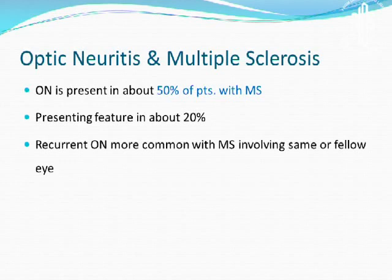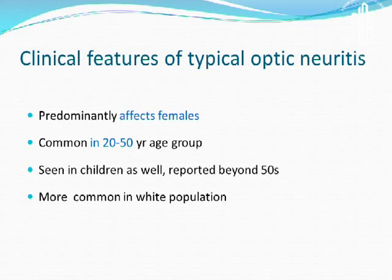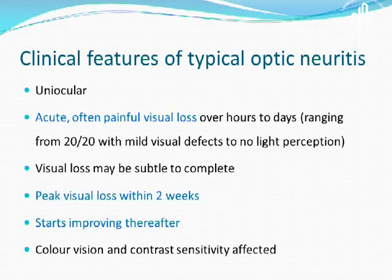Optic neuritis is seen in about 50% of patients with MS and is a presenting feature in about 20%. Recurrent optic neuritis is more common in MS, involving the same or the fellow eye. The clinical features predominantly affect females between the age of 20 to 50. It can also affect children and cases beyond 50 years of age, and it is more commonly seen in the white population.